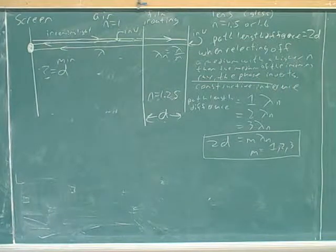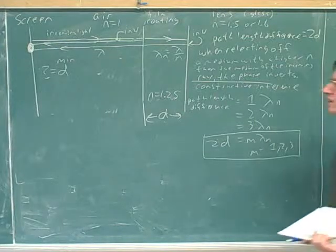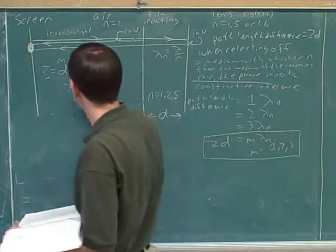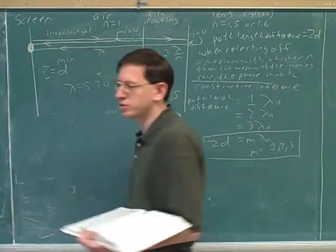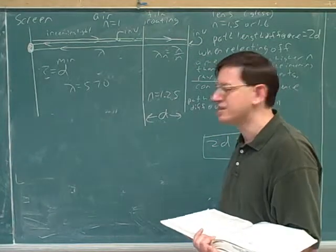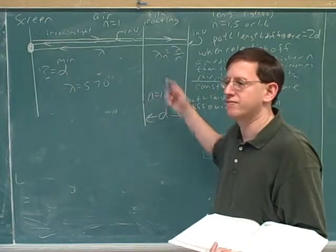Now, the wavelength they gave you was 570, right? Yes. However, that's the wavelength in the air. We would use the symbol lambda for that. That's the wavelength of what the light was in the air. We still need to figure out the new wavelength inside the film.